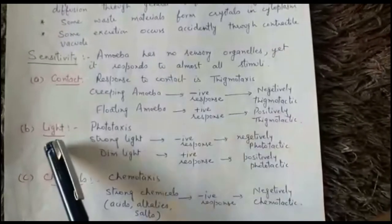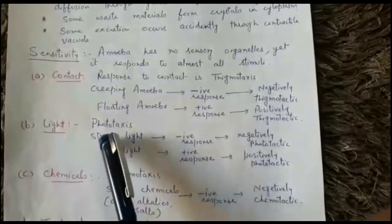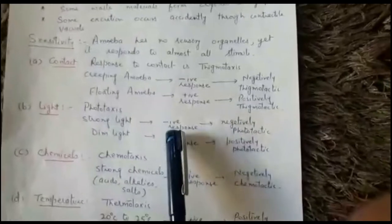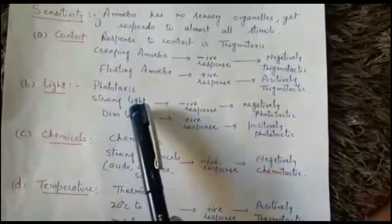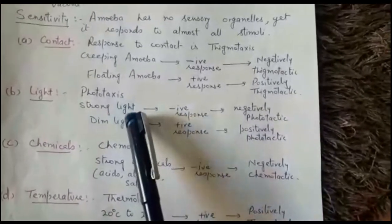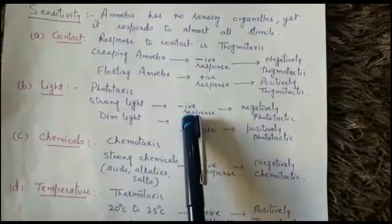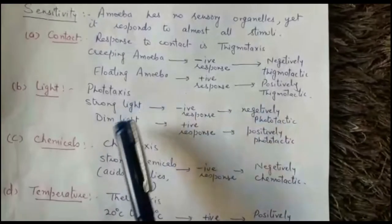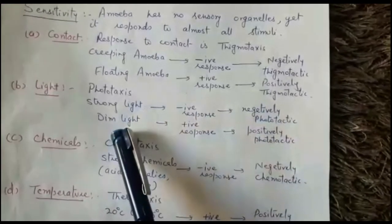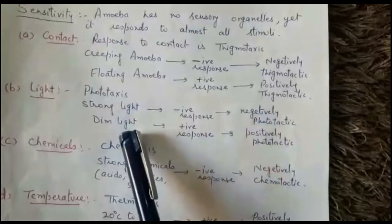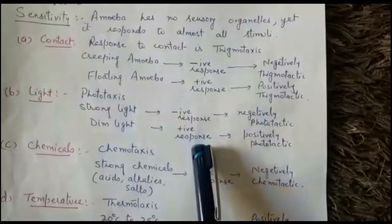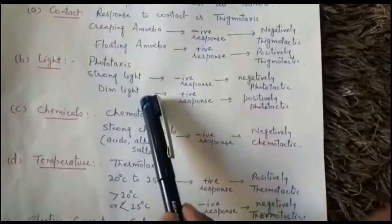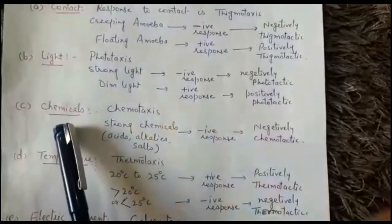The response to light is known as phototaxis. Amoeba shows negative response to strong light — it moves away from strong light, so it is negatively phototactic to strong light. But it prefers dim light and shows positive response to dim light, so it is positively phototactic to dim light.